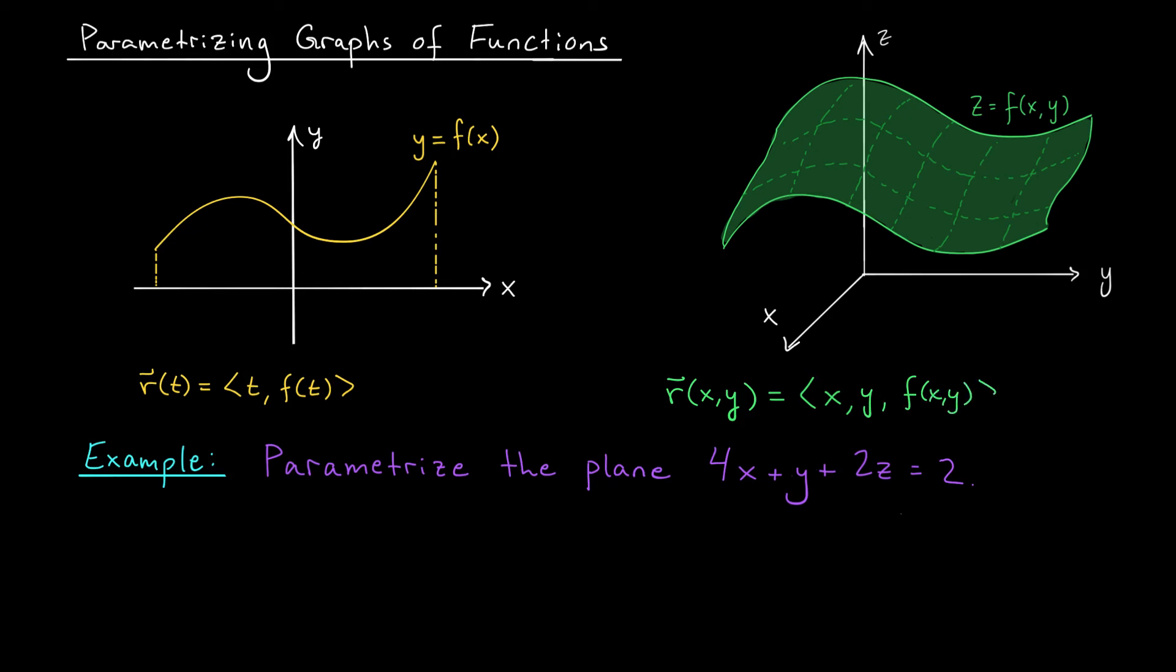Let's see if we can use these ideas to parametrize a plane. If I move everything except z to the right-hand side and then divide by 2, I would get the equation z equals 1 minus 2x minus y over 2. And there you go. z as a function of x and y. We can use the parametrization above. Our parametric equation is r of x, y. These are our parameters. Equals x, y, 1 minus 2x minus y over 2. And since we're talking about the entire plane, x and y could be any real number.